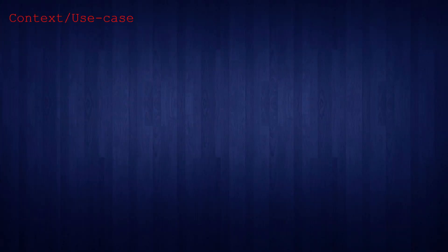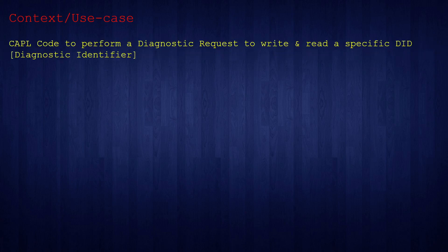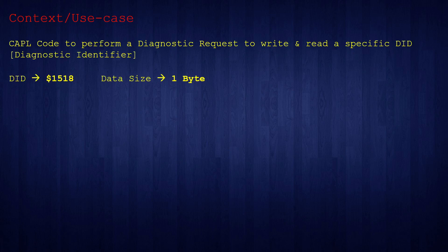Let us first see the use case under which we will be using these diagnostic CAPL functions. The context here is you need to write CAPL code to perform a diagnostic request to either write or read a specific DID, which is the diagnostic identifier. Let's assume you have a DID 1518 with a data size of one byte and you want to write this DID with a value, for example 01, during the start of your test case.